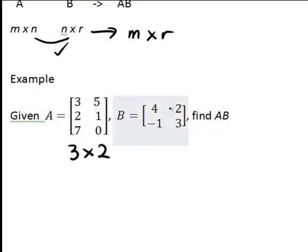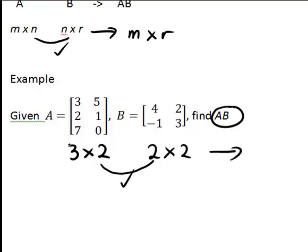While matrix B here with elements 4, 2, negative 1, 3, that has two rows and two columns giving it order 2 by 2. So first thing to check if we're wanting to find AB is whether that is defined. And yes it is, because A has two columns and B has two rows. So therefore AB will be defined and it will have order 3 by 2.